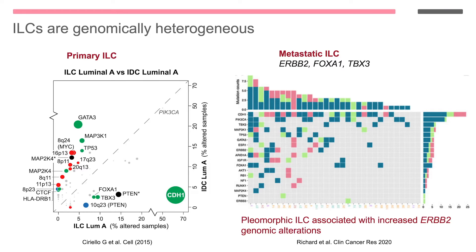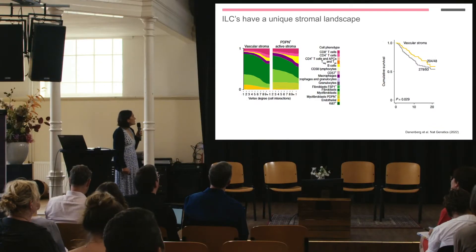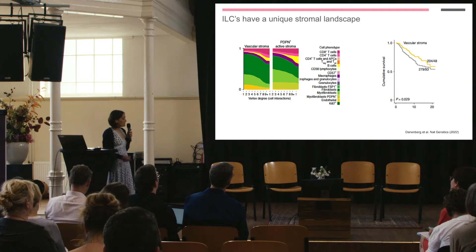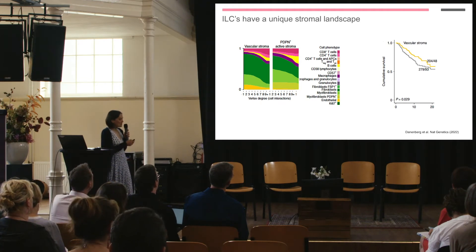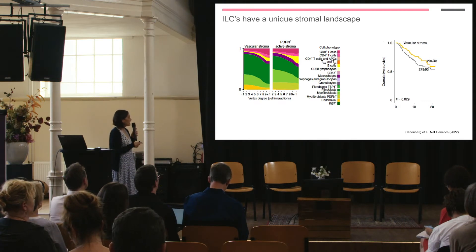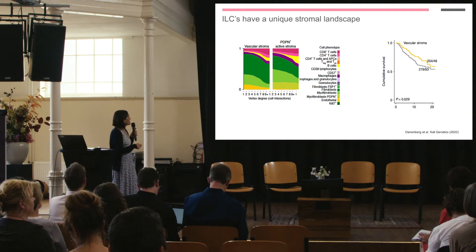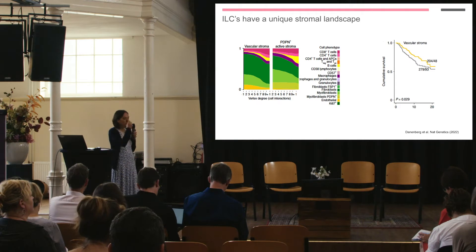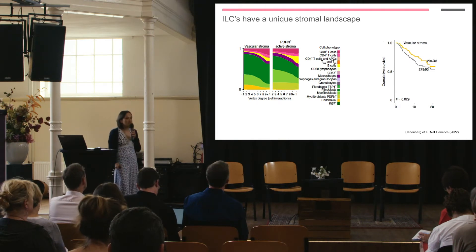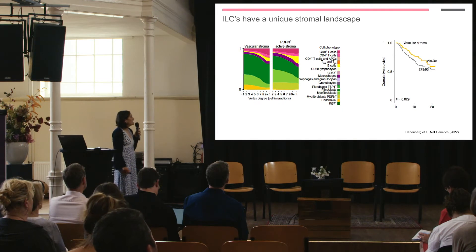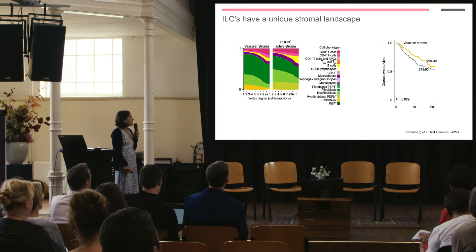It's becoming more evident — and Val is going to talk about this in the next talk — that ILCs have a unique stromal landscape which may play a role in their prognosis and therapy response. This is a paper from the Carlos Caldas group published in Nature a couple of months ago. They did high-content proteomic profiling of primary tumours from the Metabrick study and found that tumours with a vascular stroma — either a vascular signature or podoplanin-positive signature — was associated with patients with e-cadherin mutations, and was actually associated with a good prognosis.